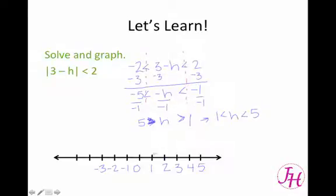So now, we can put our open circle on 1, and open circle on 5, because we didn't have any equal to underneath, and then we're shading in between.